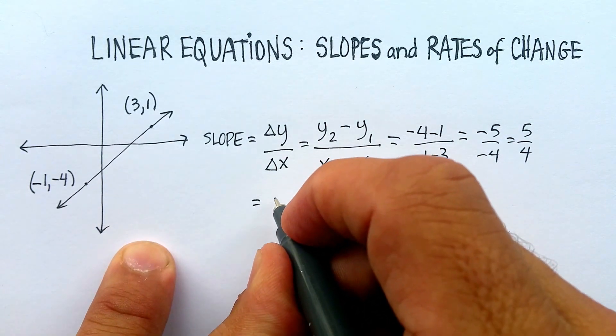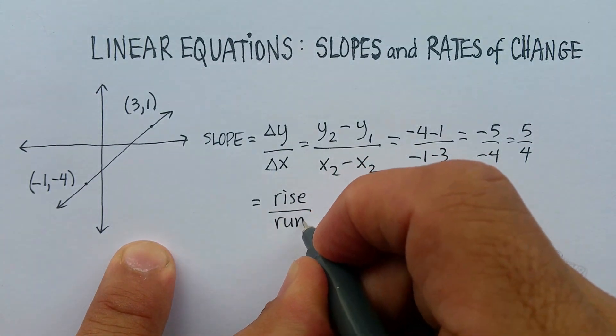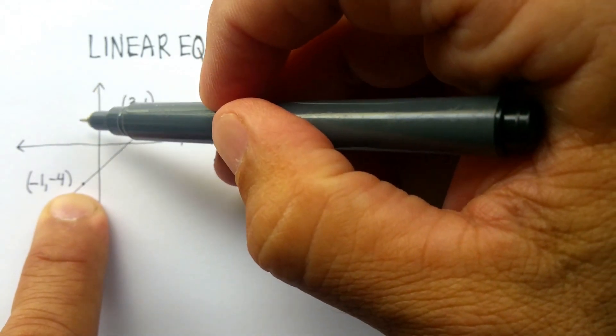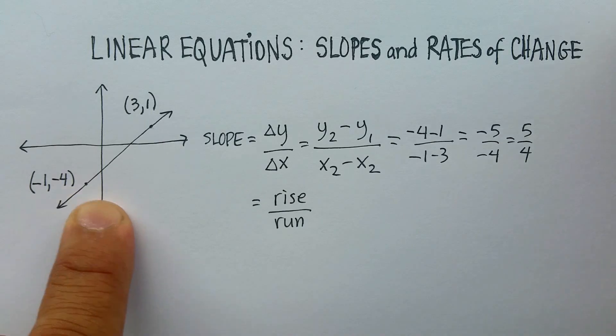The other way we learned how to do this was just to say the rise over the run. And the rise would be just counting upward, 1, 2, 3, 4, 5. And then the run would be 1, 2, 3, 4. And again, you get 5 over 4.